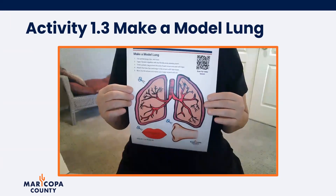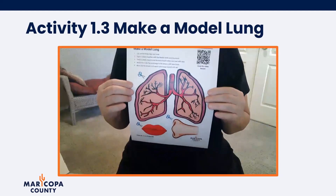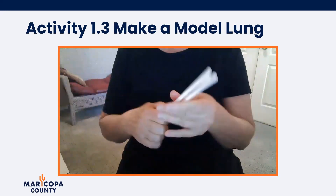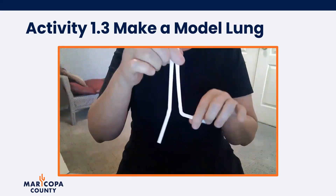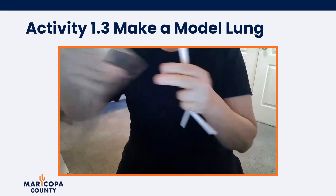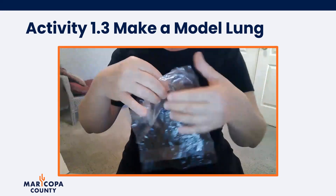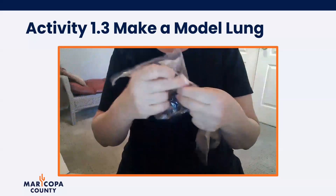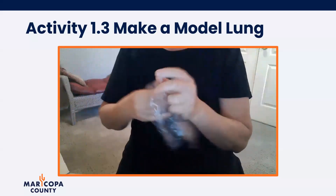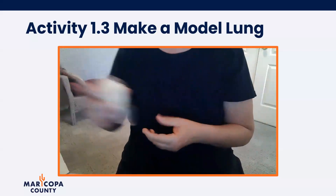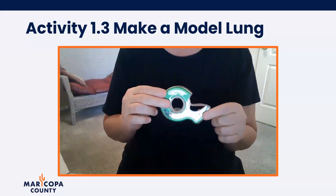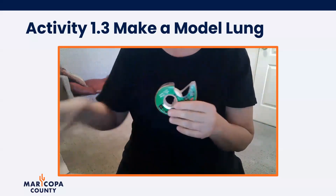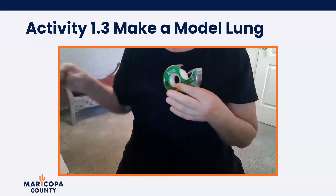I'm going to show you how you can make a model lung using just a few simple materials. You'll need a pattern, two straws with bendable ends, as well as two plastic sandwich size bags — the kind that fold over at the top, not a Ziploc bag. And finally, you'll need tape. You can use either masking tape or clear transparent tape. And a pair of scissors. Let's get started.